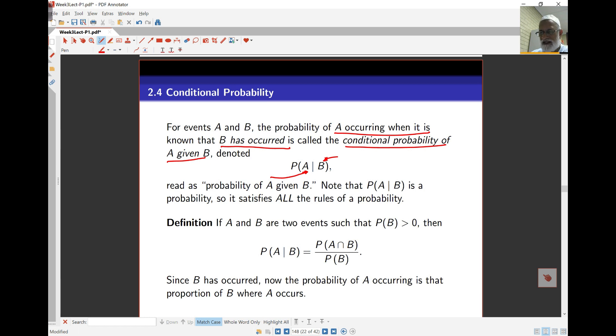Now, because this is still a probability, all the other rules of probability still apply. So probability of A given B must be greater than or equal to 0, it must be less than or equal to 1, and other ones as well we might see later that still apply here.